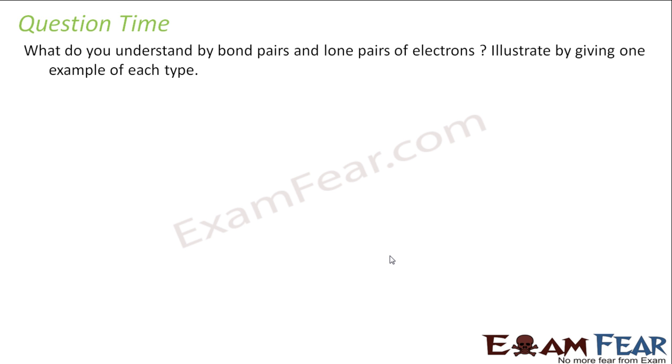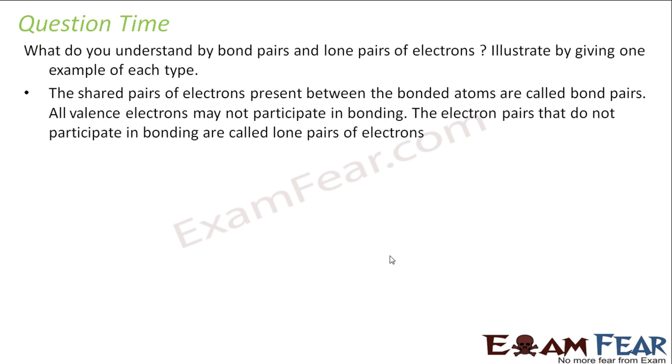So the question is what do you understand by lone pair and bond pair? Give example. The shared electron pair present in the bonded atoms are called bond pair and the electrons which are not participating in bonding are called lone pair. For example, if you see my water, these two pairs of electrons are not participating in bond, so they are my lone pair. These electrons are participating in bond, so they are my bond pair.